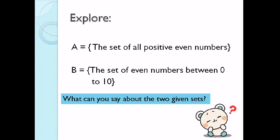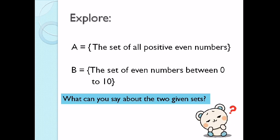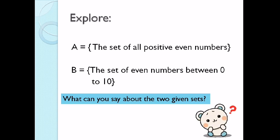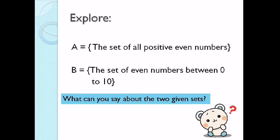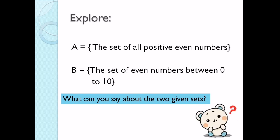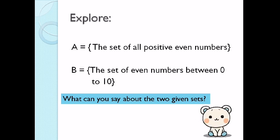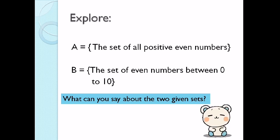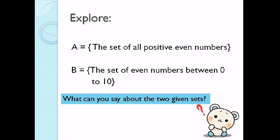While on set B, what are those even numbers between 0 and 10? 2, 4, 6, 8. So we gave 4 elements because it said between 0 to 10. The first set has infinitely many, while this one we can easily count because it is distinct. And that is our topic for today: the difference between finite and an infinite set.